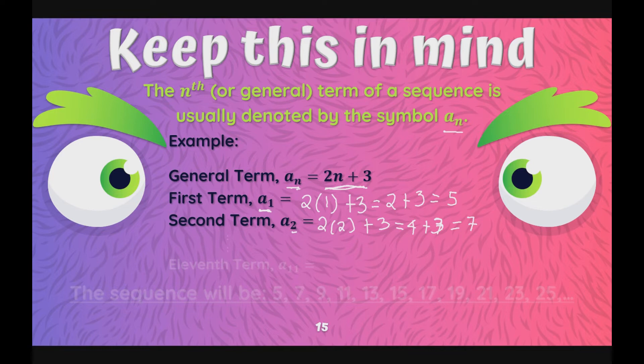By using that formula, the general term, pwede natin ma-identify yung bawat term, yung 3rd, 4th, 5th term, and so on ng ating sequence. Pero, hindi na natin kailangan isa-isahin. Pwede tayong dumiretso sa 11th term nang hindi na natin hinahanap si a sub 3 hanggang sa a sub 10.